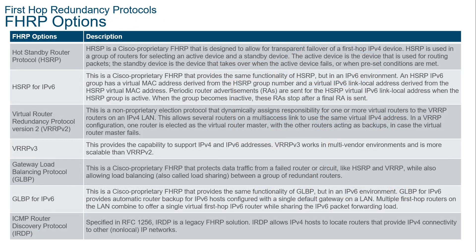The routing protocol options include: HSRP (Cisco proprietary) and HSRP for IPv6; VRRPv2 — a non-proprietary election protocol that's dynamically assigned; VRRPv3 — which supports both IPv4 and IPv6; GLBP (Gateway Load Balancing Protocol) — a Cisco proprietary FHRP that protects data from a failed router, similar to HSRP and VRRP, while also providing load sharing; GLBP for IPv6; and the ICMP Router Discovery Protocol, which is a legacy FHRP.